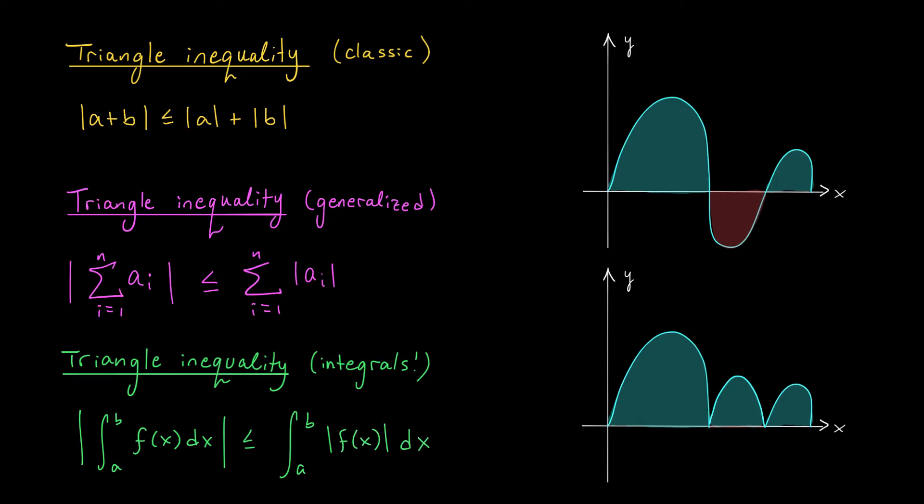You can think of this version of the triangle inequality geometrically in terms of areas. Take a look at this region I have up here at the top. If you take the integral from a to b of f(x) dx, you're adding up these area components. You're going to have some positive areas above the x-axis and some negative area below. That negative area might cancel out some of your positive area and ultimately reduce the value of your integral.